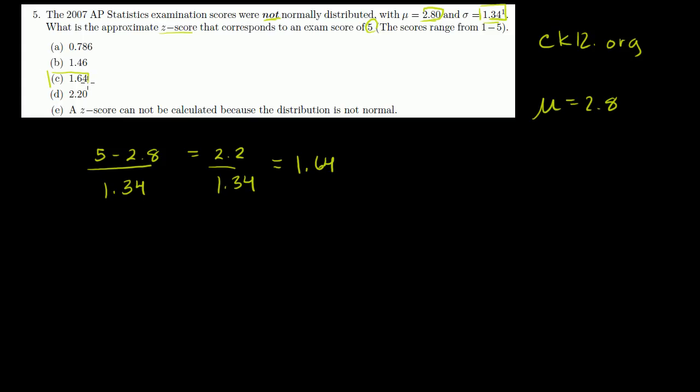So this is equal to 1.64, and that's choice C. So this was actually very straightforward. We just have to see how far away we are from the mean if we get a score of 5, which hopefully you will get if you're taking the AP statistics exam after watching these videos.